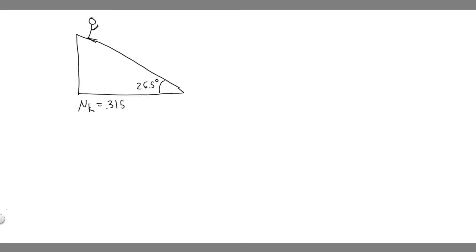Now we want to label the forces acting on the object. We have the force mg, which is the weight force going straight down. We also have the normal force going perpendicular to the incline — that's what the normal force is. We also have a force of friction going in the opposite direction of travel.